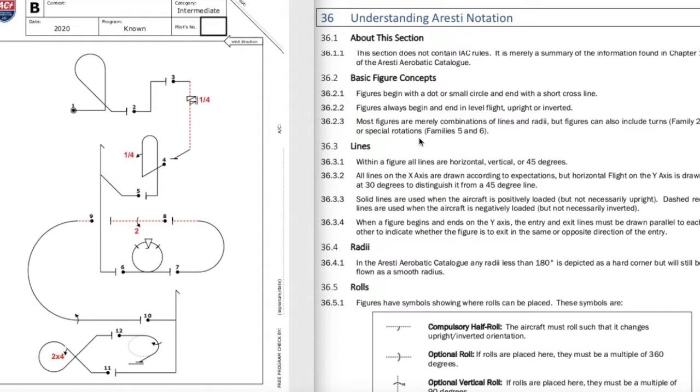Most figures are merely a combination of lines and radii. But figures can also include turns or special rotations. A lot of people call this ice cream cone because it looks like an ice cream cone. I can say either an ice cream cone or I can say vertical up, 5 eighths loop, 45 down. You can see how it's a combination of lines and radii.